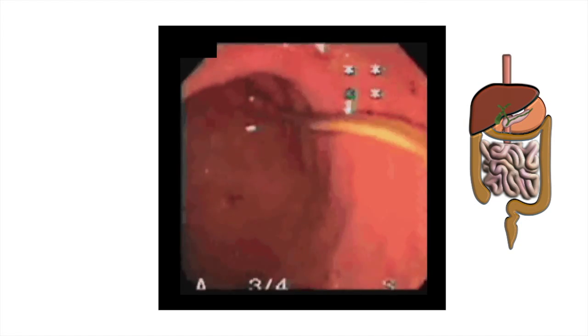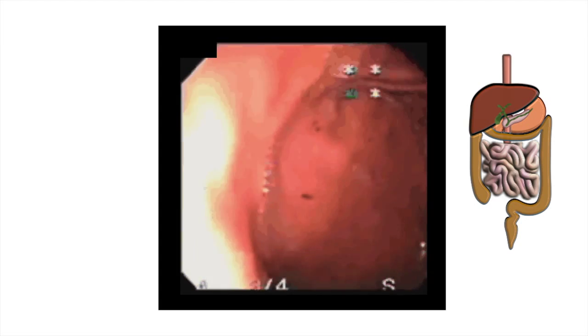Ascaris worms do not multiply in humans. The average female worm produces 200,000 eggs per day, and thus there is typically no difficulty in finding eggs in the stool with non-concentrated stool smears.